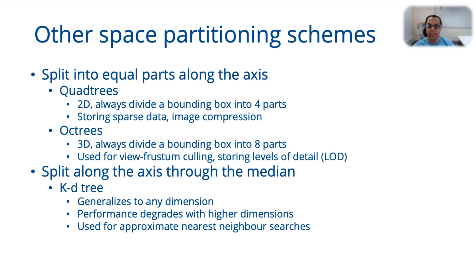Quadtrees are in 2D and they are used for image compression, for storing sparse data, and various other uses. Octtrees are used for classifying space utilization in 3D. They are used for view frustum culling — think about how they might be used for that once I describe what octtrees are — and they are used for storing various levels of detail of an object in 3D.